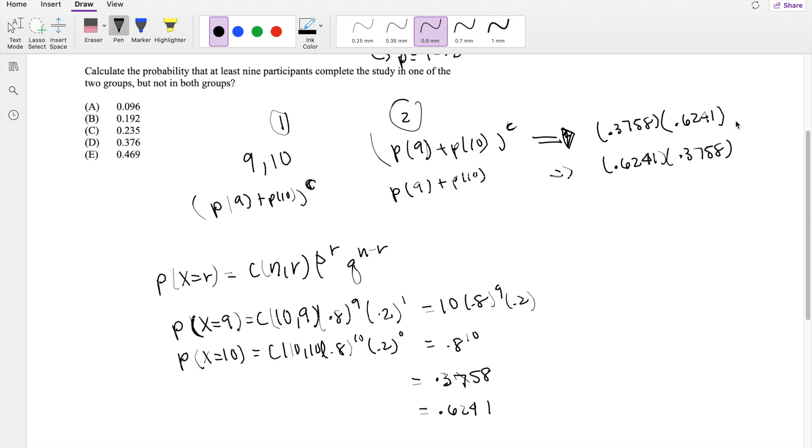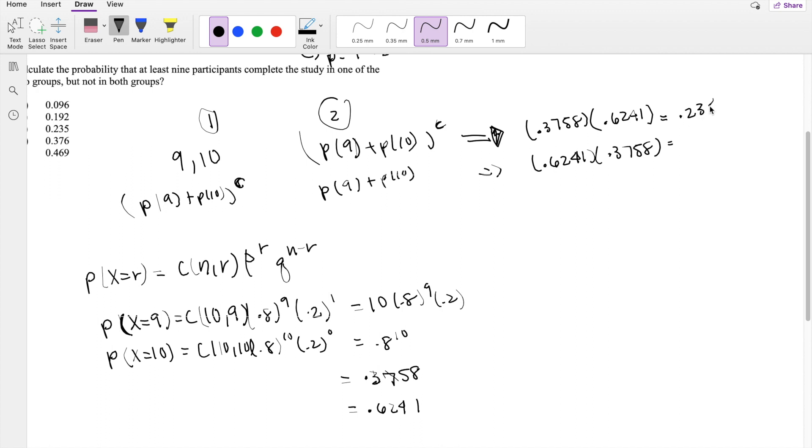So then this is equal to 0.2345, and this is also 0.2345. So adding those probabilities up, you get 0.4691, which is approximately equal to 0.469, which is your answer E.